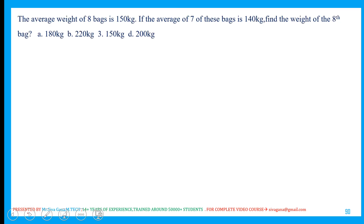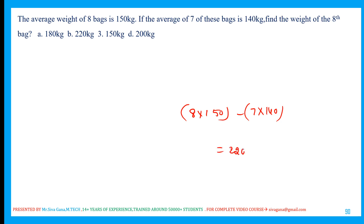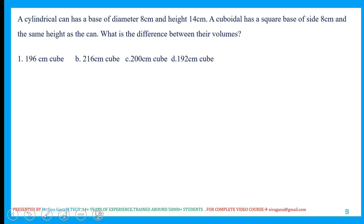The average weight of 8 bags is 150. Average weight of 7 bags is 140. Find the weight of the 8th bag. Very simple: total weight = 8×150 minus 7×140 = 1200 − 980 = 220. Using the on-screen calculator, the answer is 220.